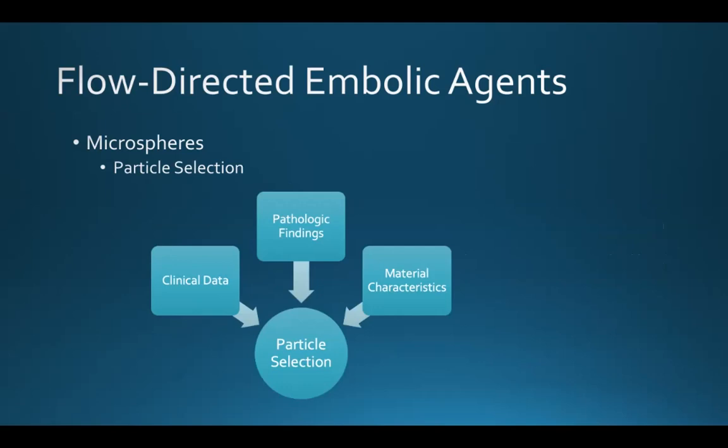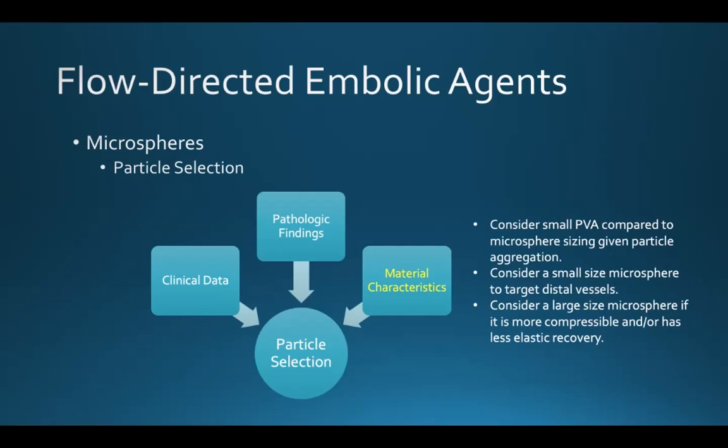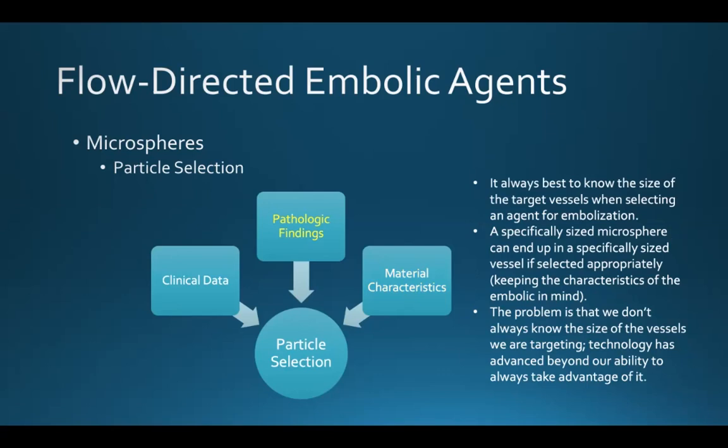That thought process involves considering clinical data, pathologic findings, and material characteristics. When comparing PVA with microspheres, you should always think about using a smaller particulate PVA size due to particle aggregation. You can consider a small size microsphere if trying to target distal vessels, and consider a larger size microsphere if the one you're choosing is more compressible or has less elastic recovery.